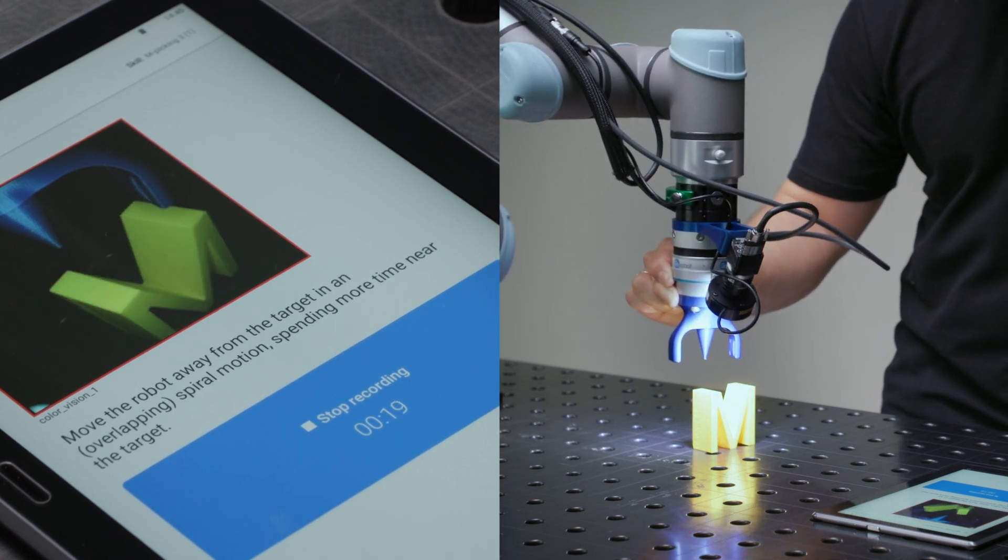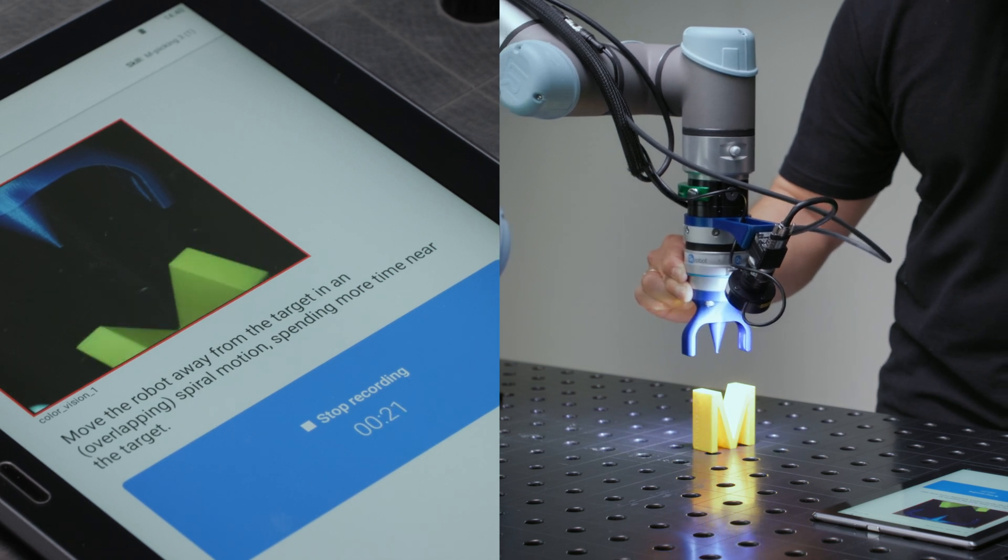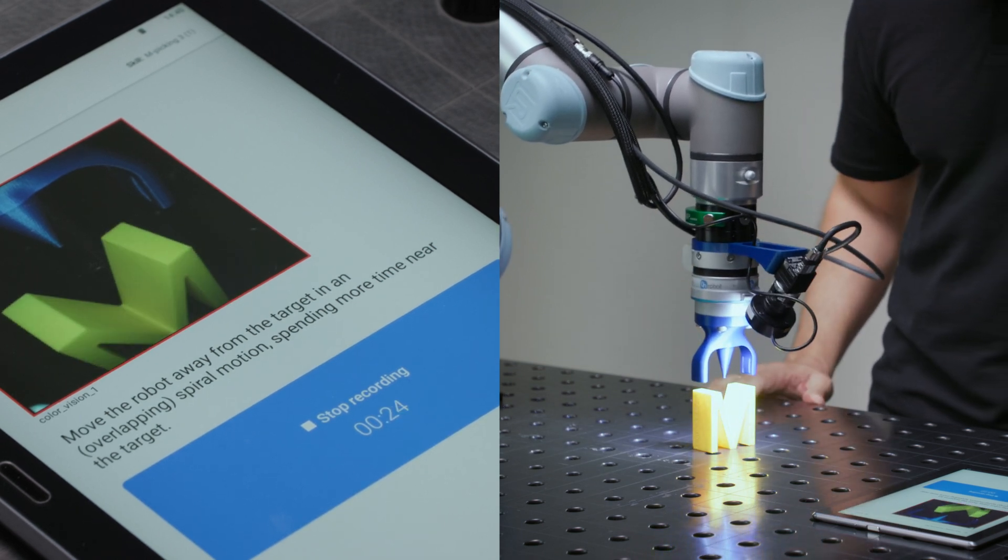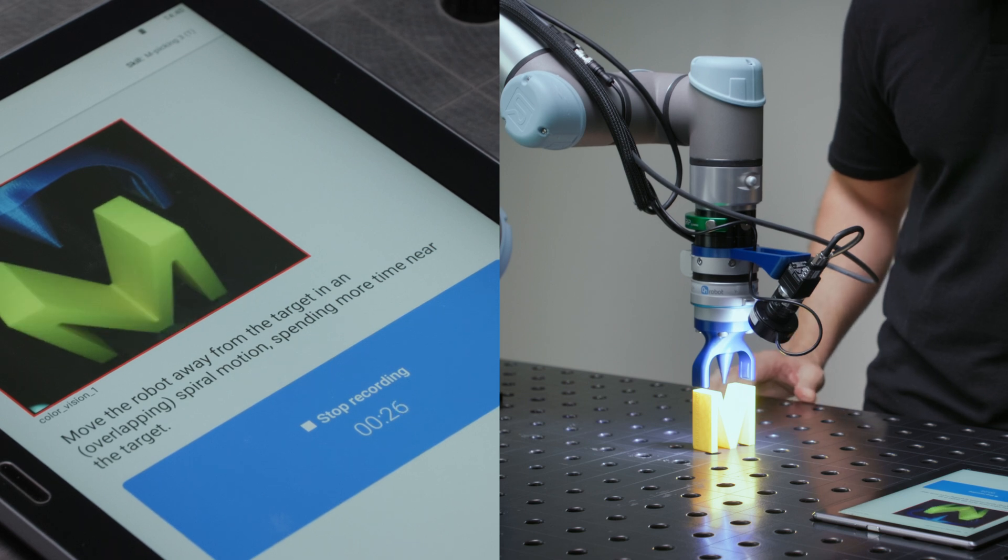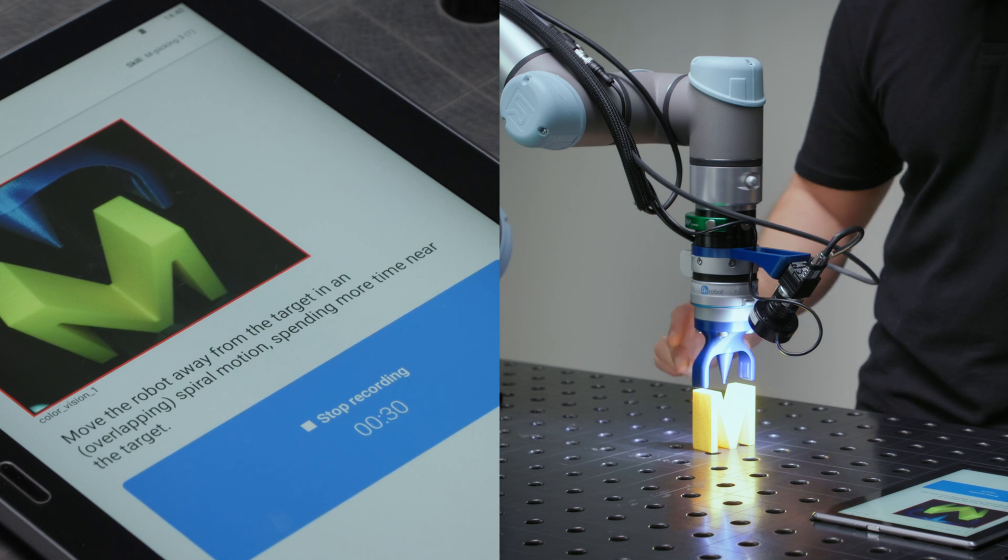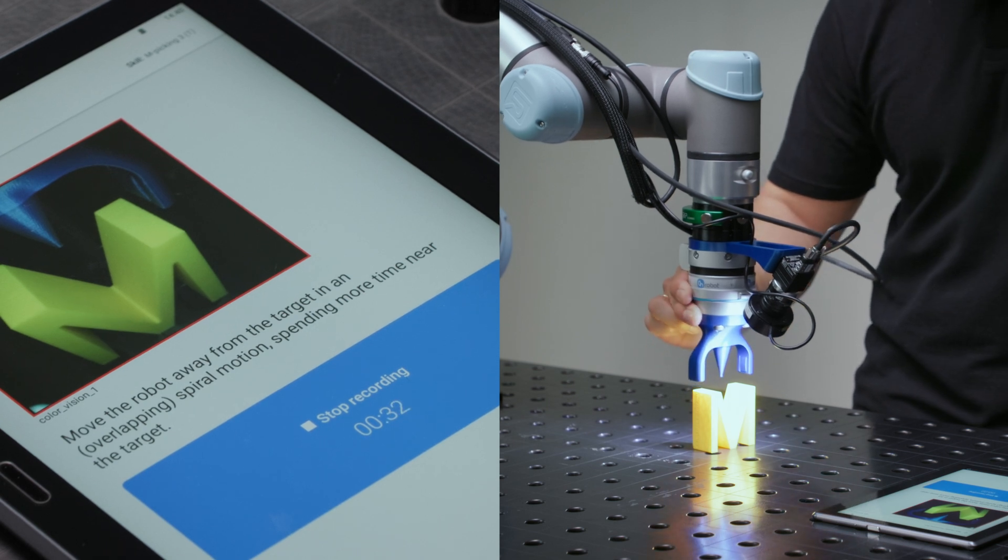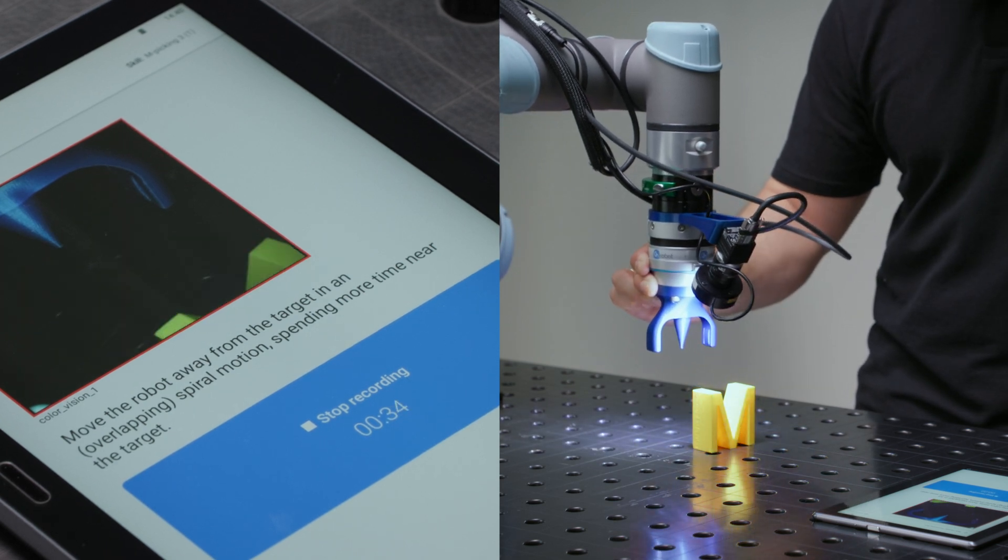During recording, if you let go of the robot, it will move back to the target position. This provides a preview of the final motion the trained skill will perform starting from a given pose.